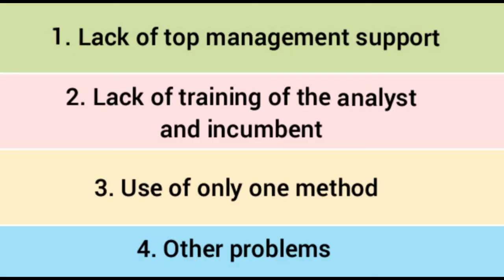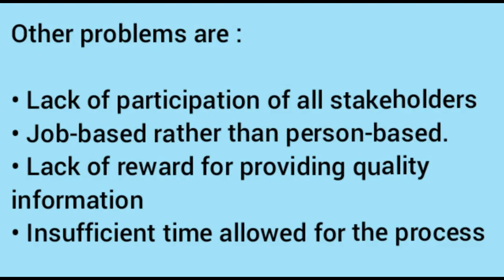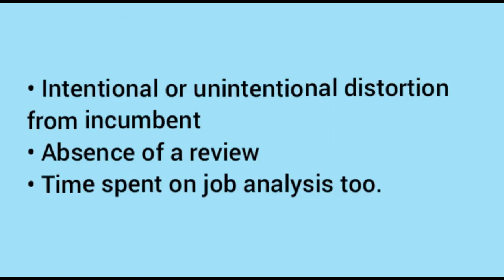Problems with job analysis include: first, lack of top management support — management must communicate to incumbents that the purpose of job analysis is to enhance organizational performance. Second, lack of training of the analyst or incumbent — if incumbents are not trained, they may distort data because they perceive the process as a threat. Third, use of only one method — since each method has advantages and disadvantages, at least two methods should be used. Other problems include lack of stakeholder participation, being job-based rather than person-based, insufficient time, and intentional or unintentional distortion by incumbents.